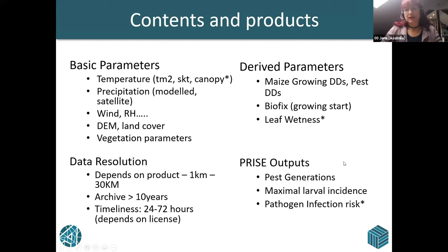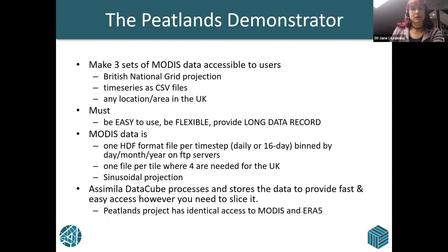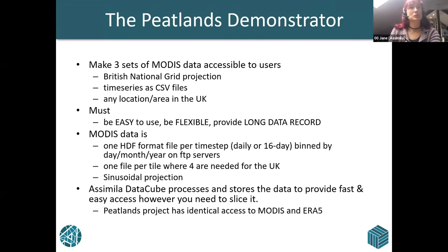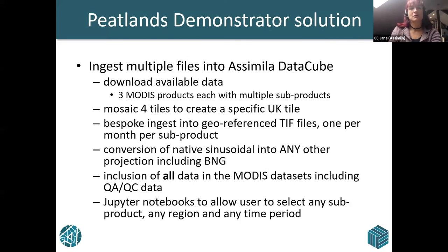The second product is the Peatlands demonstrator, which required making three sets of MODIS data available to users in British National Grid, as a time series and CSV files, for any location or area in the UK. It needs to be really easy with a long data record. MODIS data has one file per time step binned by day, month, year on FTP servers, and you need four files to make up the UK in a sinusoidal projection — these two things don't match terribly well. Our data cube stores it, does the job, and allows people to access it at the other end. We ingest a load of files, mosaic them, turn them into georeferenced TIFF files — one per month per subproduct — with conversions via GDAL warp and all the rest of it. We've still got all the QA and QC data in there, and we've provided a front end for the user as well.